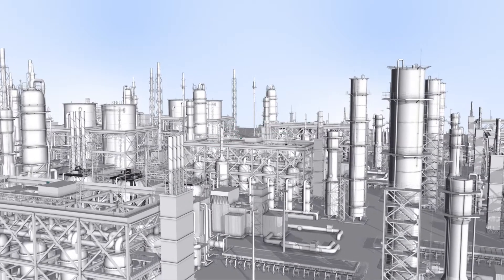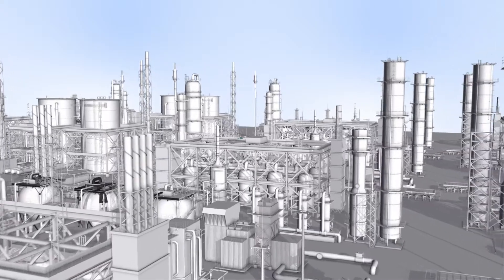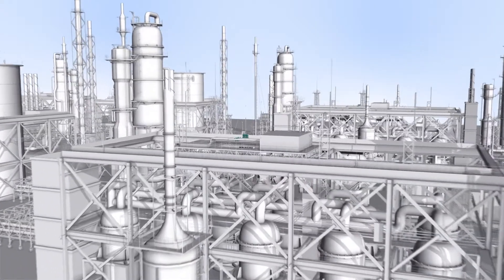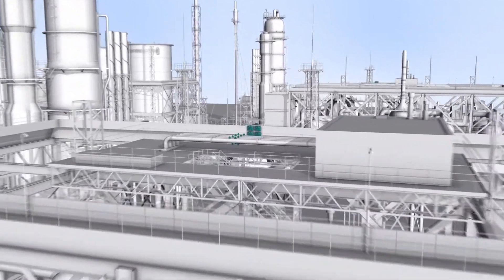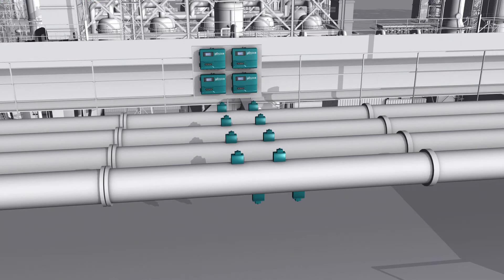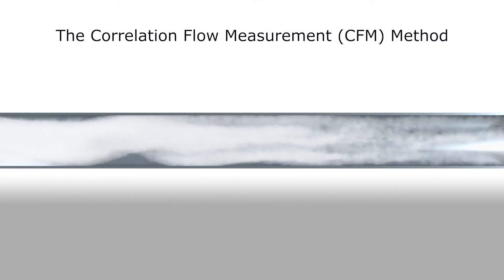Correlation flow measurement is a technology that measures the flow of fluids such as steam through pipes. In this case, it shall be shown within a pipe where steam is flowing from left to right.